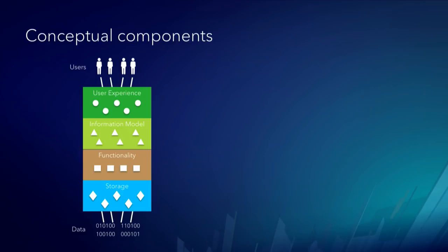The yellow layer in the diagram is the information model — taking data and functionality and turning it into something meaningful and reusable that makes sense to users. You can think of these as information products. And on top of that is user experience, which is where you take that information product and connect it to the user via an application.